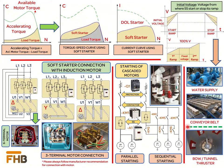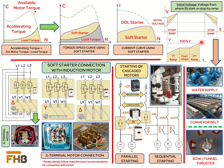Another technique is constant current starting. In this technique, the soft starter delivers voltage to the motor until it reaches the specified current level. At this specified current level, the voltage ramp is stopped until the current drops, and then the voltage ramp continues again towards the full voltage. Another technique is torque control, which provides constant acceleration torque during the motor startup by adjusting the motor power so that the motor accelerating torque remains as constant as possible.